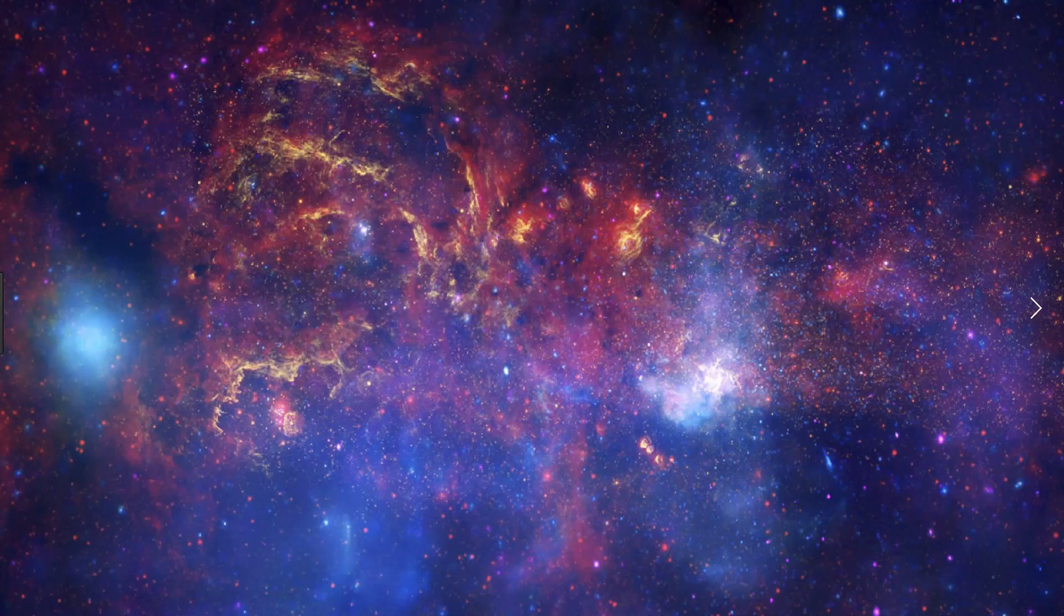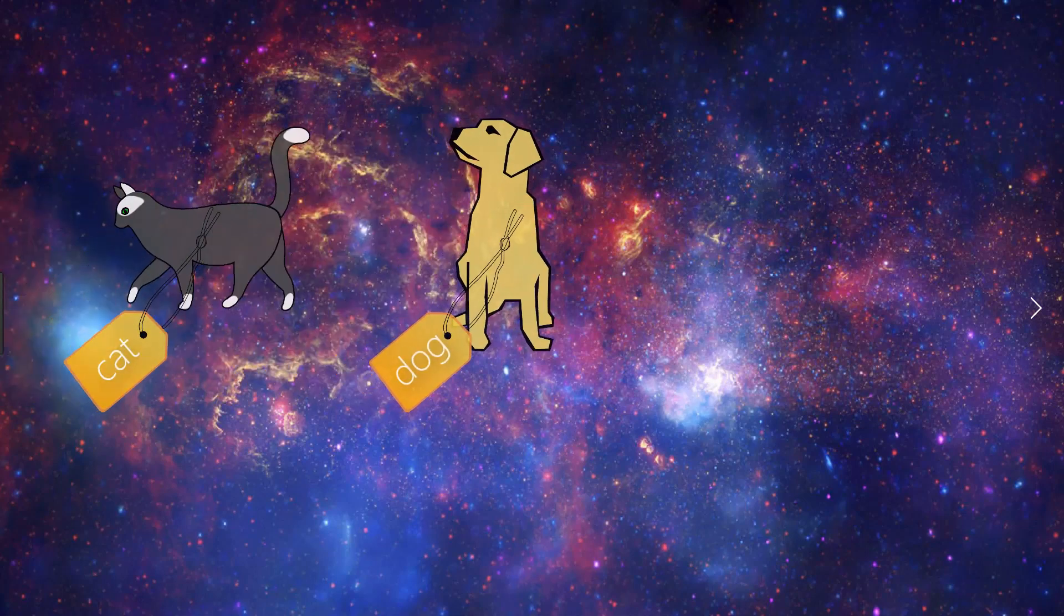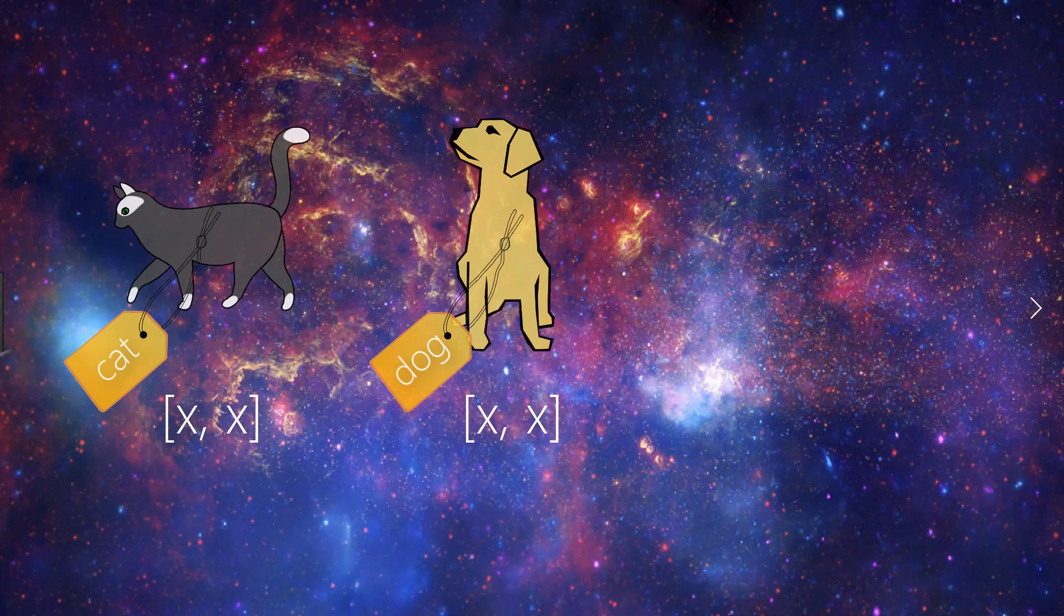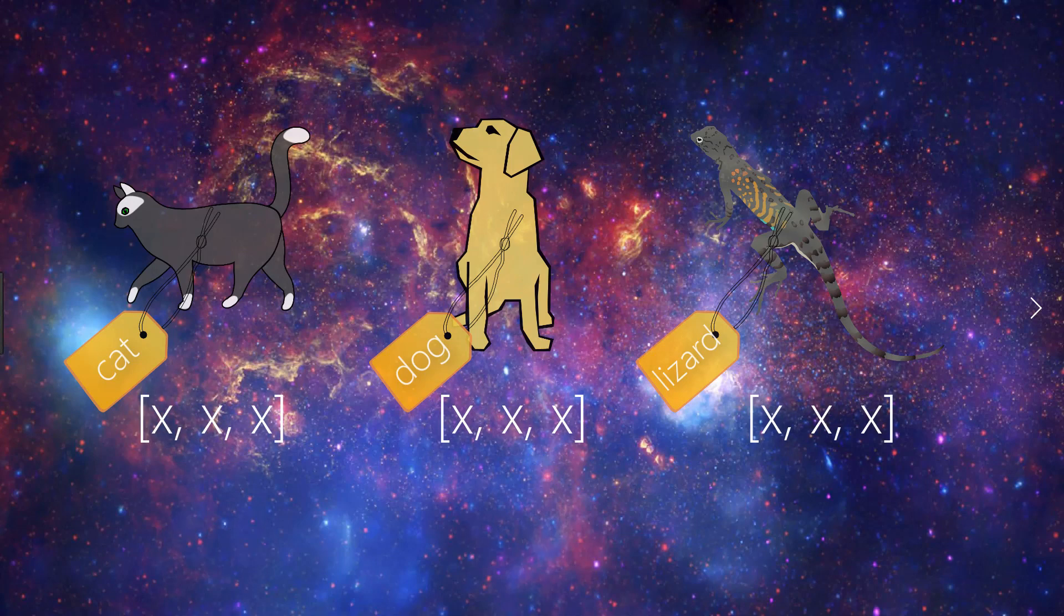The length of these vectors is equal to the number of classes or categories that our model is expected to classify. So if we were classifying whether images were either of a cat or of a dog, then our one-hot encoded vectors would each be of length 2 since there are two categories total. If we added another category like lizard so that we could classify whether images were of cats, dogs, or lizards, then our corresponding one-hot encoded vectors would each be of length 3 since we now have three categories.